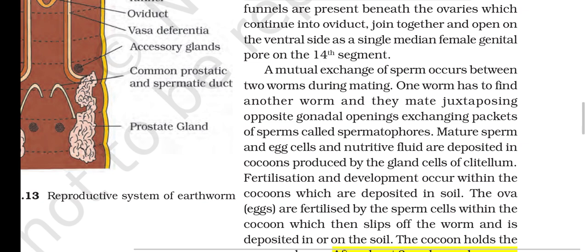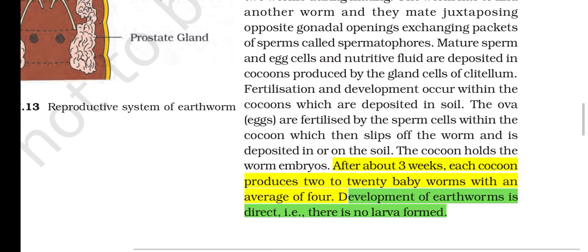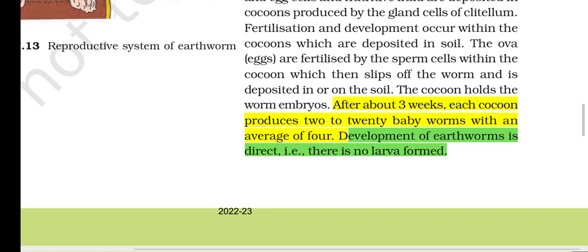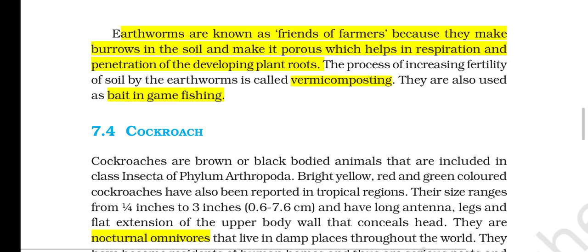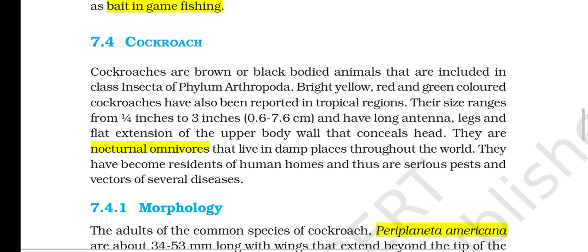Four pairs of spermathecae are located in segments 6 to 9, one pair in each segment; they receive and store spermatozoa during copulation. One pair of ovaries is attached at the intersegmental septum of the 12th and 13th segments; ovarian funnels continue into oviducts, joining together and opening on the ventral side as a single median female genital pore on the 14th segment. During mating, two worms exchange packets of sperms called spermatophores. Fertilization and development occur within cocoons produced by the gland cells of clitellum; cocoons are deposited in the soil. After about three weeks, each cocoon produces 2 to 20 baby worms (average 4); development is direct with no larval stage. Earthworms are known as friends of farmers because they make burrows making soil porous, helping in respiration and penetration of plant roots. The process of increasing soil fertility by earthworms is called vermicomposting.